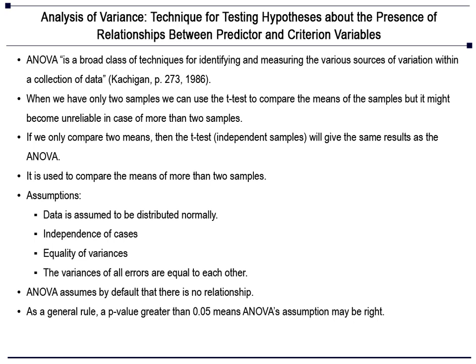There are certain assumptions used in ANOVA. The first one is normality, which basically means data is assumed to be normally distributed. The second one is independence of cases. The third is equality of variances, which is also known as homoscedasticity or homogeneity, where variances of all errors are equal to each other.